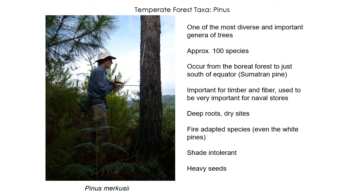In the dominant taxa of the temperate zone, pine is really important — but it's way more diverse in the temperate forest than in the boreal forest. Pine is one of the most diverse genera of trees in the world, with about 100 species. They occur from the boreal forest down to just south of the equator — about seven degrees south. Pinus merkusii, Sumatran pine, is the southernmost pine, found on Sumatra in Indonesia. We don't have any native pines in the southern hemisphere temperate forests.